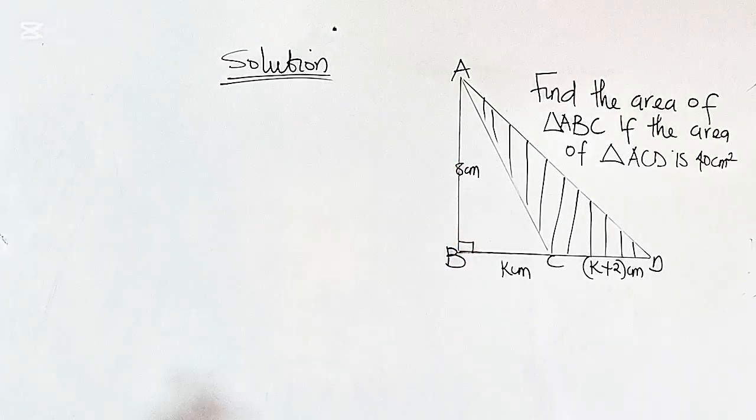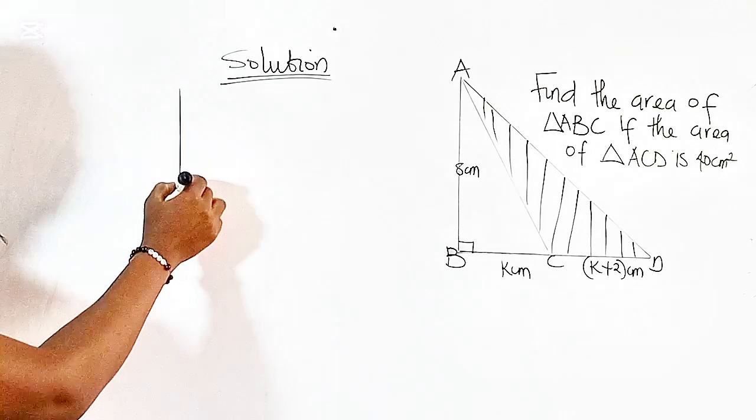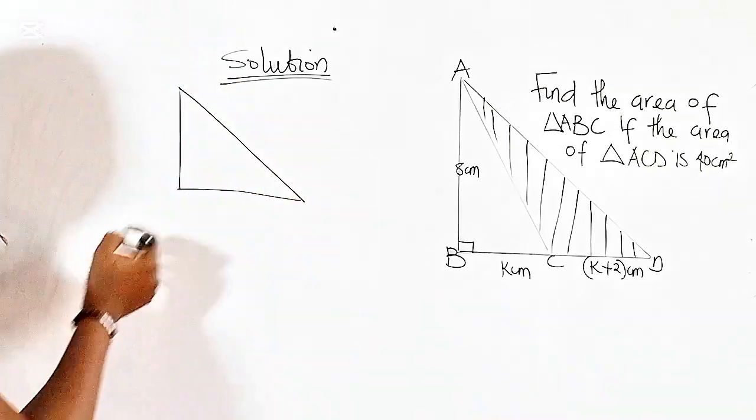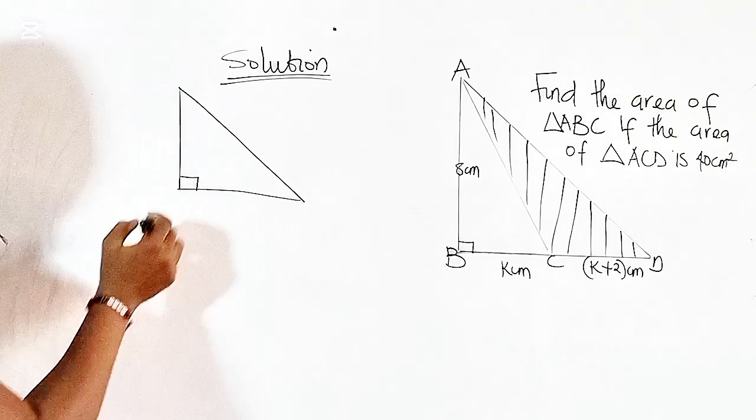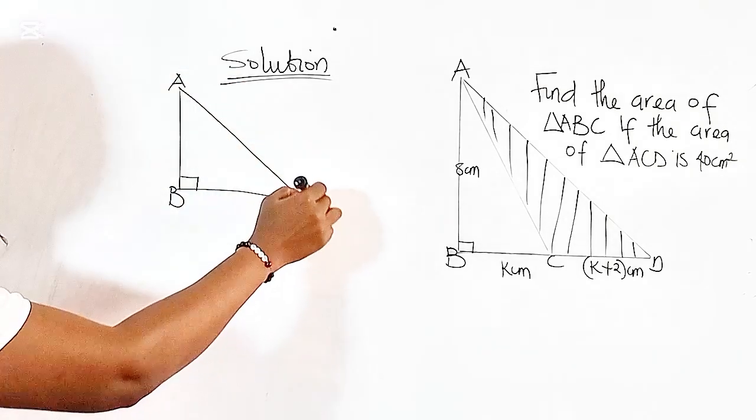So the first thing we are going to do is to calculate the area of triangle ABD. So we have triangle ABD in this form. It's right angled at B. So we have B here, we have A, and we have D.